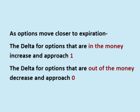Delta and gamma also change over time as the option moves closer to expiration. As an in-the-money call option nears expiration, it will approach a delta of 1. And as an in-the-money put option nears expiration, it will approach a delta of negative 1. As out-of-the-money calls and puts approach expiration, they will approach a delta of 0.